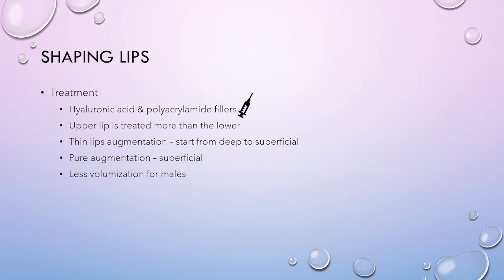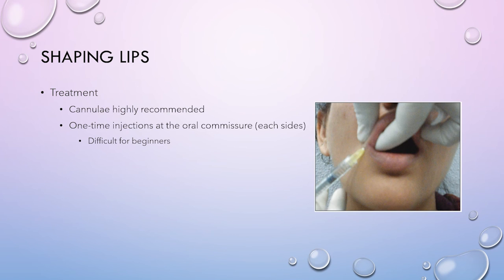Hyaluronic acid and polyacrylamide fillers are among the most common types used on lips. The upper lip usually requires more filling than the lower since it tends to lack volume. For genetically thin lips, injection at the deeper layer should be performed first, followed by superficial injections for minor volume adjustments. It is important to avoid over-volumization on male lips as it could make them appear more feminine. A cannula is much more recommended than a needle, with only one point on either side of the oral commissure used to reach both upper and lower lip.